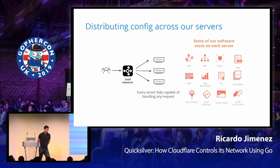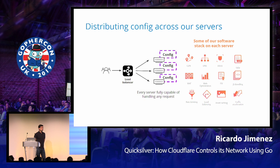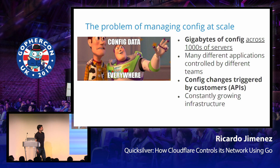And here comes the problem: how do you handle the config of those servers? When I say config, I don't only mean basic settings — I mean user configuration. When we have a big user base and they want to deploy changes and configure how Cloudflare behaves for them, they need to deploy that customer data on our servers. We have a growing global customer base, so we need to deploy that config across each one of our servers. This is the problem of managing config at a non-trivial scale — it's gigabytes and gigabytes of config across thousands of servers.